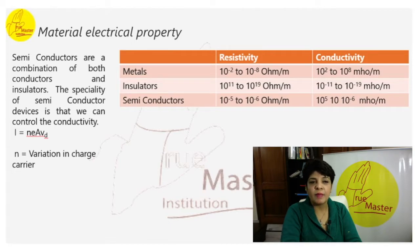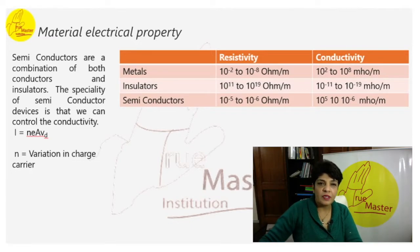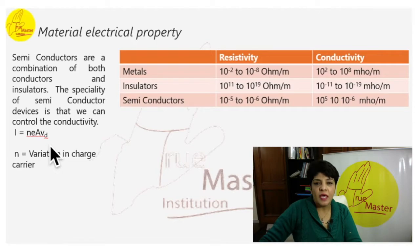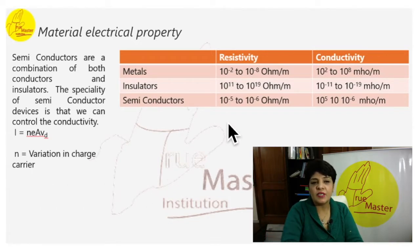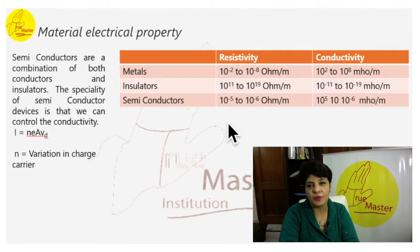The main property is that we can control the conductivity of a semiconductor. Current I is equal to n·e·A·v_d — this formula you are aware of. Here n is the variation in charge carrier, so if we control this variation we can control the conductivity. The range of resistivity and conductivity for conductors, insulators, and semiconductors is given here for reference.